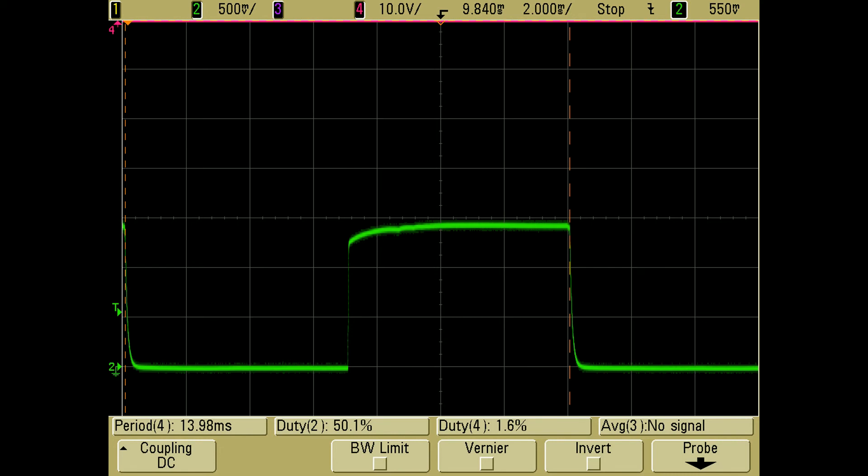Channel 2 is reporting a 50.1% duty cycle, and this is quite accurate. If you choose to use this waveform for adjustment, keep in mind that it is inverted in relation to the output waveform. A 40% duty cycle at the output waveform will correspond with a 60% duty cycle on this waveform.